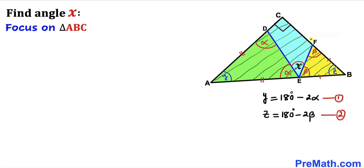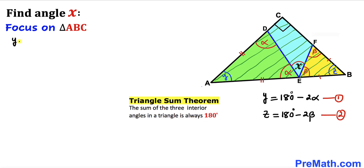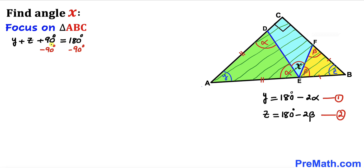Finally, let's focus on the big right triangle ABC and recall the triangle sum theorem. The sum of all three angles — 90 degrees plus angle Y plus angle Z — must equal 180 degrees. So Y plus Z plus 90 degrees equals 180 degrees. Subtracting 90 degrees from both sides gives us Y plus Z equals 90 degrees. From Equations 1 and 2 we have Y and Z in terms of alpha and beta, so let's substitute those values.